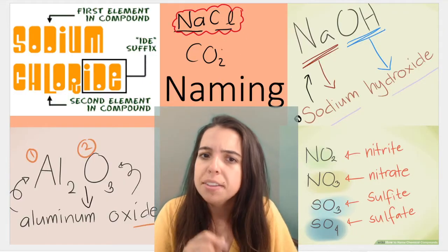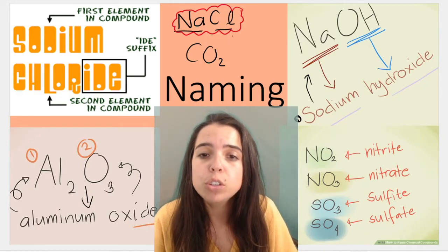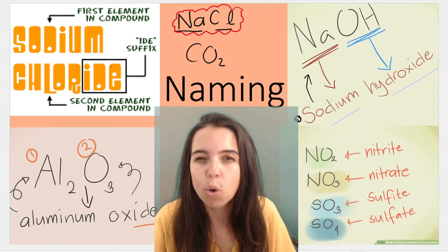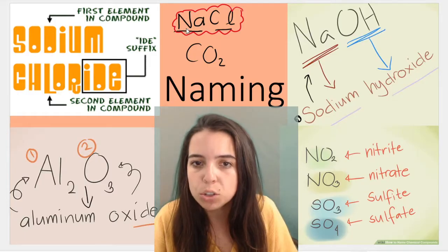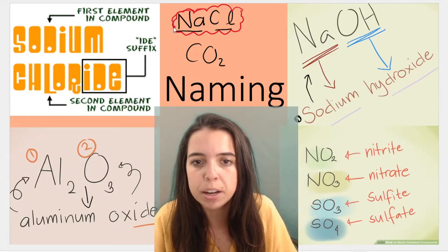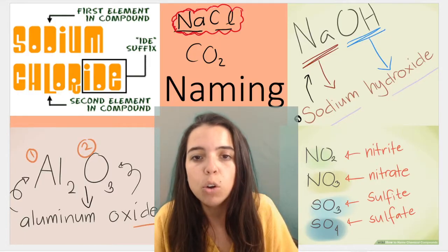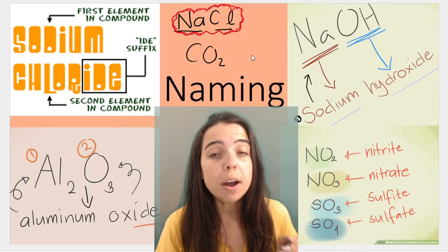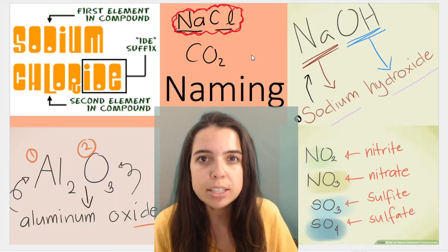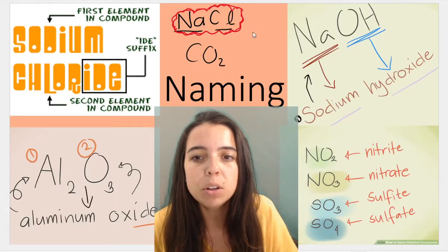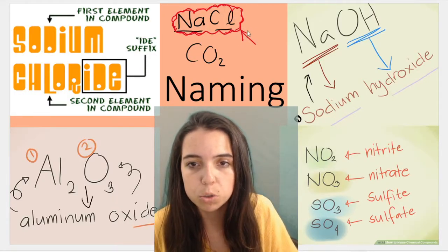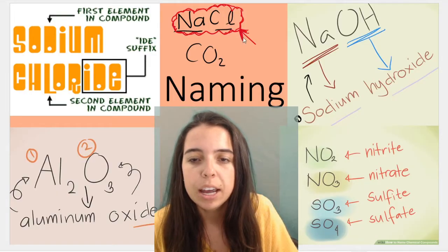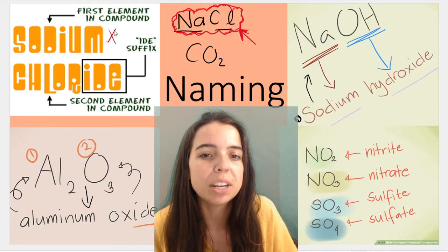You need to understand that NaCl refers to the compound sodium chloride. Sodium chloride is composed of sodium ions and chloride ions from chlorine. So what you need to be able to do is go from the chemical formula, also called the molecular formula, and tell me the chemical name.